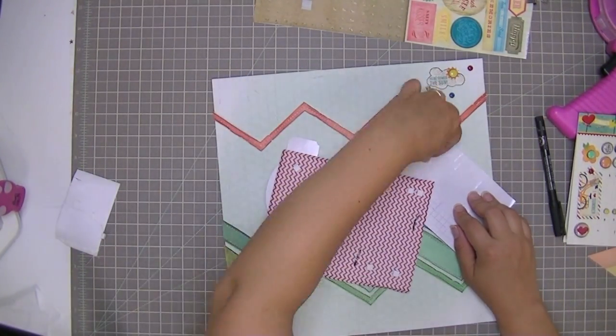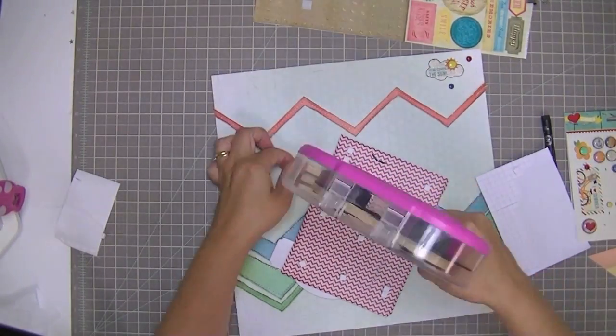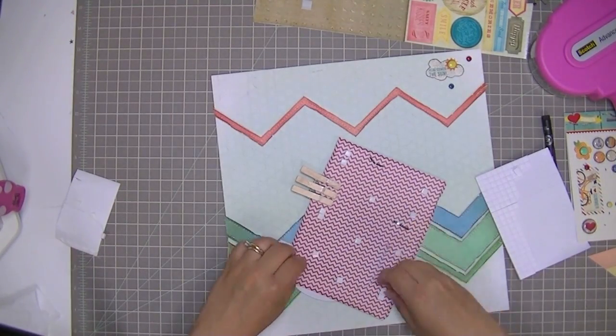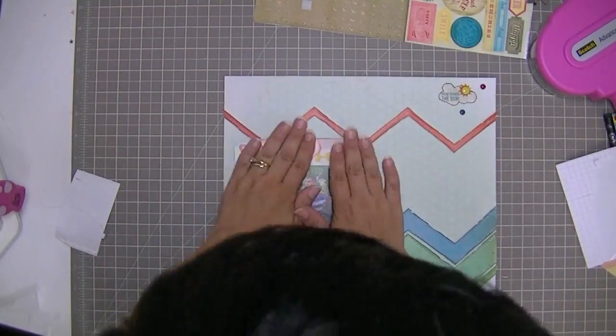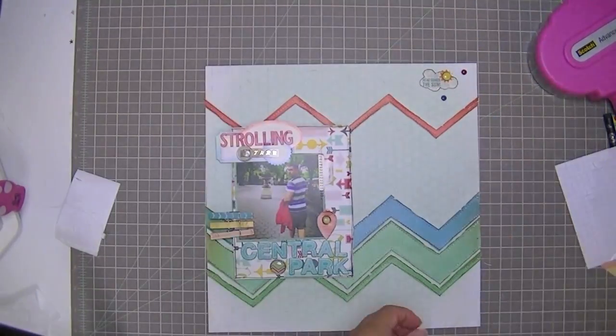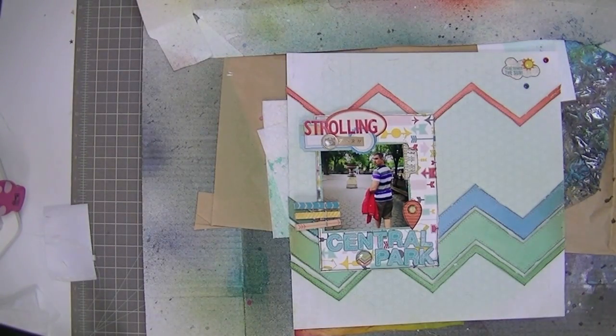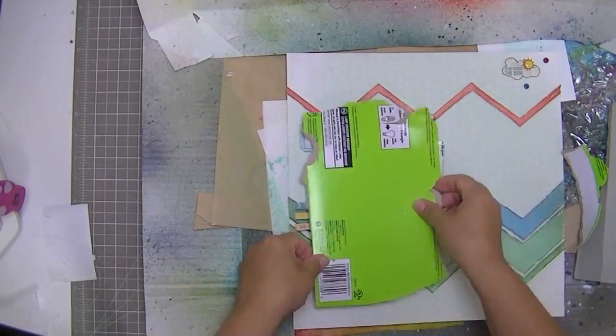I'm going to, because these clothespins take up so much space and cause the paper to lift off the surface, I'm going to put the whole thing on fairly thick pop dots. So I'm not using, usually I use the Stampin' Up pop dots. I'm using the other brand. I just get it at Michael's. I don't know what it's called. The pop dots that are thick.